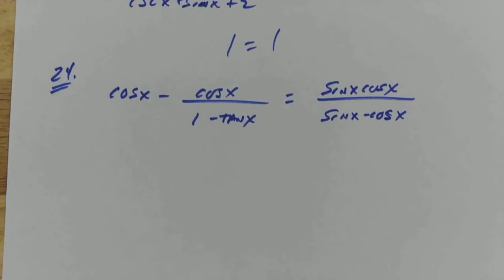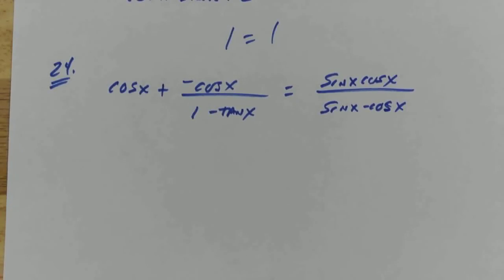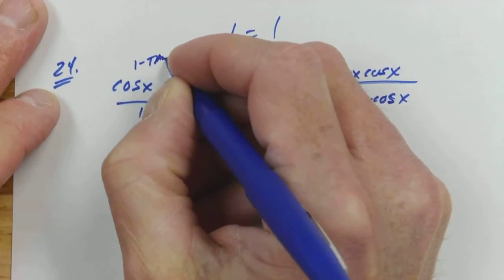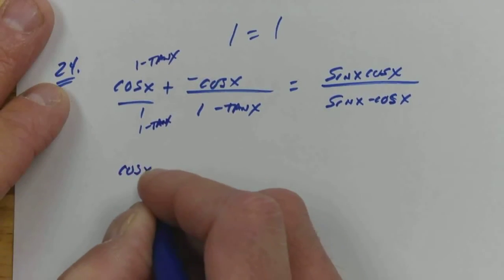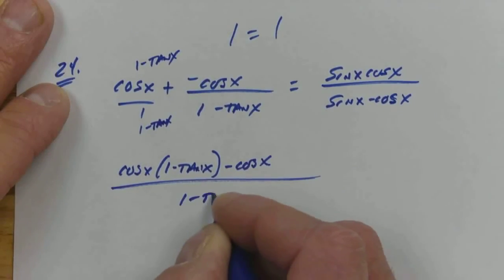First thing I'm going to do to get rid of a potential, oh no, I don't know if we really have to do that. I just like to do this just in case if I have a common mistake that might pop up. Let's find a common denominator. So I'm going to have to multiply the top and bottom by 1 minus tangent x. So then I've got cosine x times 1 minus tangent x minus cosine x all over 1 minus tangent x.